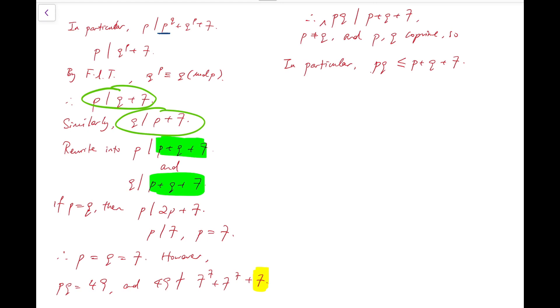The way I'm going to solve it is to put everything on one side, which is that pq minus p minus q minus 7 is less than or equal to 0. And try to add some numbers on both sides, so that the left-hand side is then factorizable. I'm going to add 8 on both sides. And then I'm going to factorize the left-hand side, which is p minus 1 times q minus 1 is less than or equal to 8.